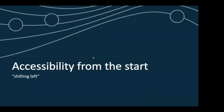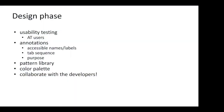Accessibility from the start — we call that shifting left at DQ. The idea is that accessibility should be incorporated even in the design phase. That involves usability testing with users with disabilities, who are often overlooked, so it's definitely a good idea to incorporate them to get that perspective.